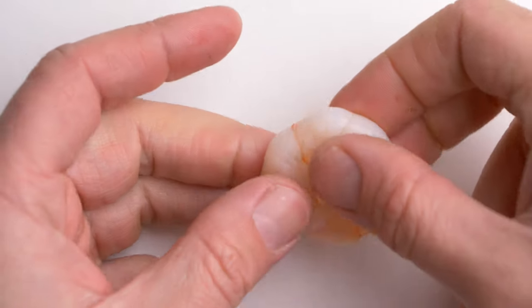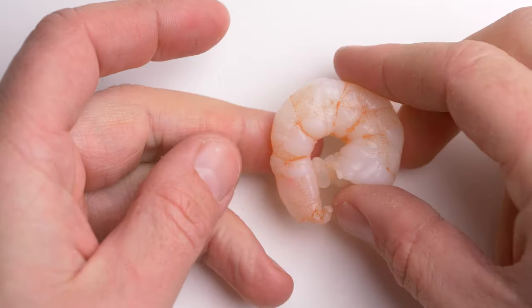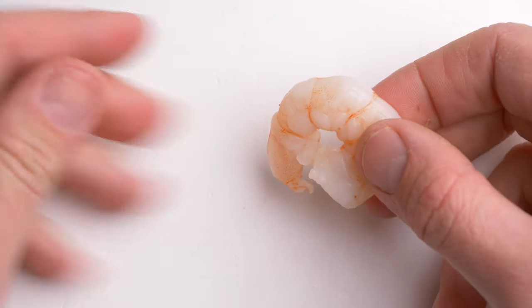The problem with prawns is that it's not very easy to put them onto the hook. This is purely because the bait is quite soft.